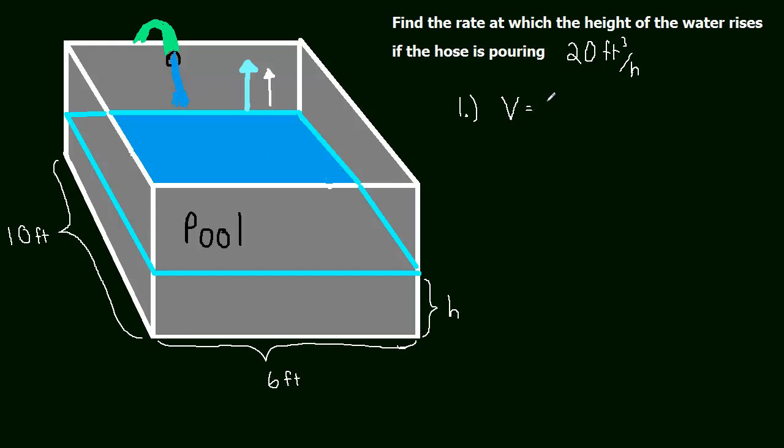Volume is going to be base times height times length. So volume is equal to base times length, or we could say width times length, maybe that makes more sense, width times length times height.